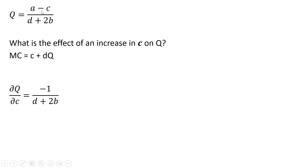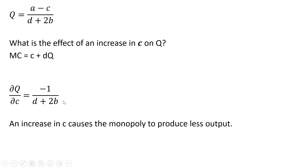The partial derivative of minus C is just minus 1. The partial derivative of A is 0, so you're just left with this result in the numerator, all divided by what's in the denominator. And since this partial derivative is negative, an increase in C causes a monopoly to produce less output.